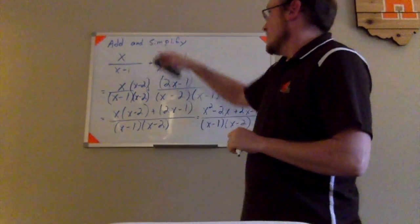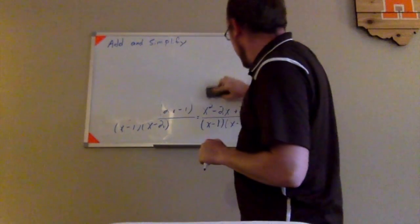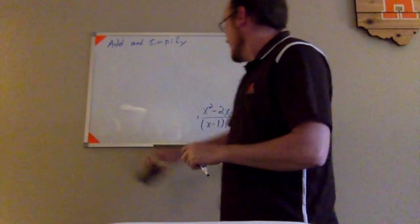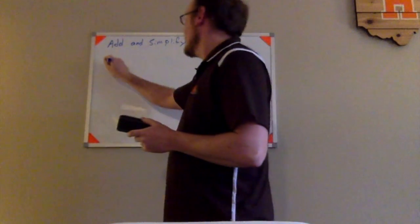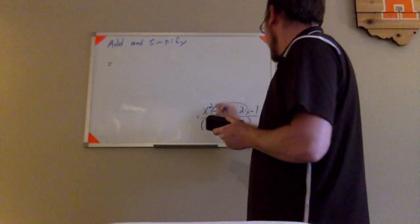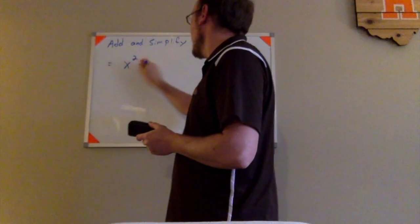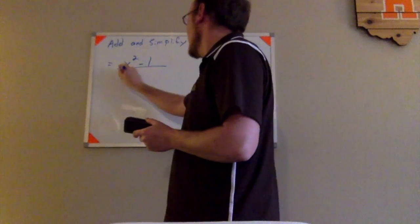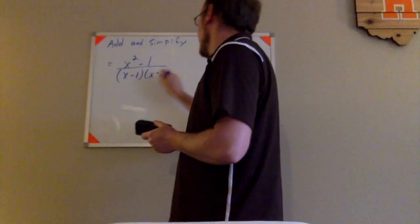Running out of room on the board, so I'm going to jump back up here to the top and erase this over here. I need to combine my like terms in my numerator. This minus 2x and plus 2x right here are going to cancel each other out. So I'm left with x squared minus 1 in my numerator, and in my denominator I'm left with x minus 1, x minus 2.